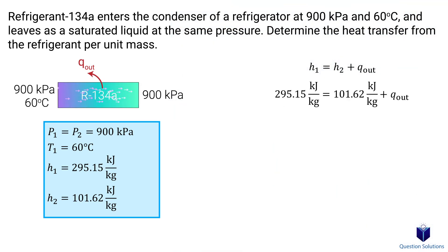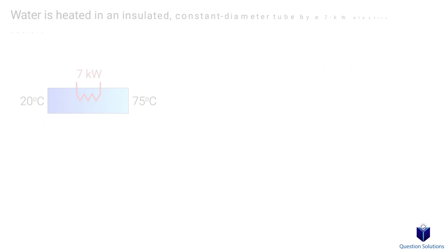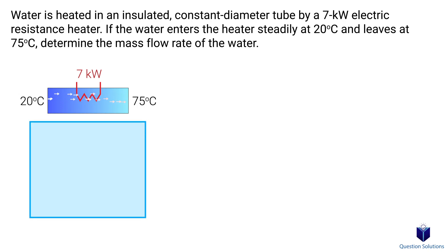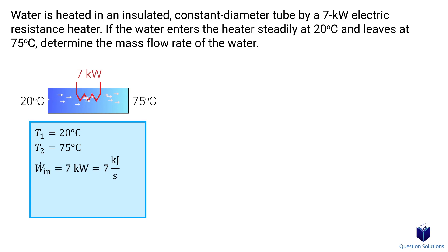Now that we have these values, we can plug them into our equation and solve for the heat loss. In this next question, we have water that's heated in a tube and we need to figure out the mass flow rate of the water. The initial temperature is 20°C, and after heating it has a temperature of 75°C. The heater has a power rating of 7 kilowatts, which is our work input. We will start with our energy balance equation — for inputs we have mass flow, enthalpy, and work input.